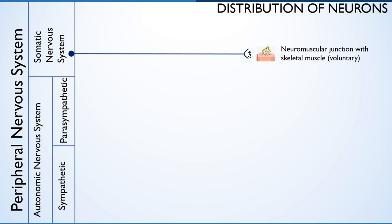The axons of somatic motor neurons extending from the CNS are myelinated. Here in this diagram, the blue colored neuron which is thick is myelinated. These emerge from the ventral horn of the gray matter of the spinal cord and run uninterrupted, without any ganglia or synapse, straight to the neuromuscular junction.